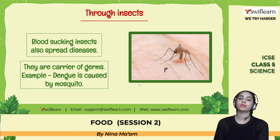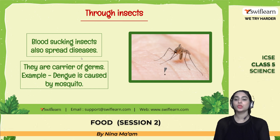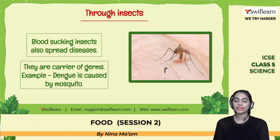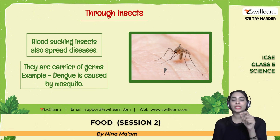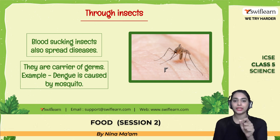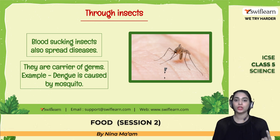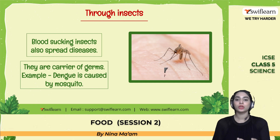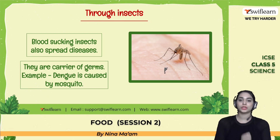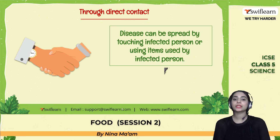Insects are responsible for spreading viruses and diseases. Blood-sucking insects such as mosquitoes are carriers of germs. For example, dengue is caused by a mosquito. If a mosquito bites a person who already has dengue and then bites another person, there is a high chance of transferring dengue to that second person.